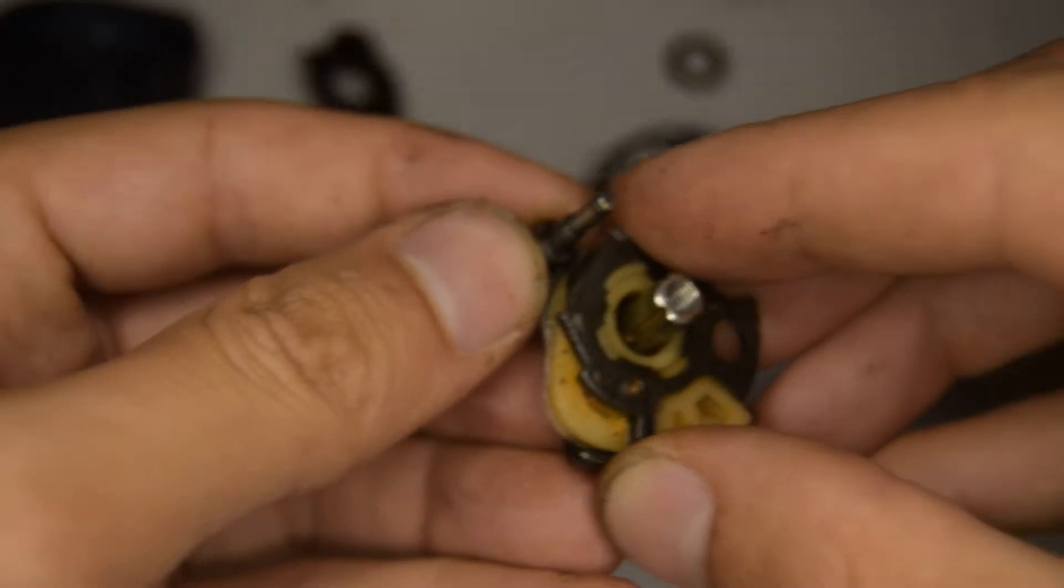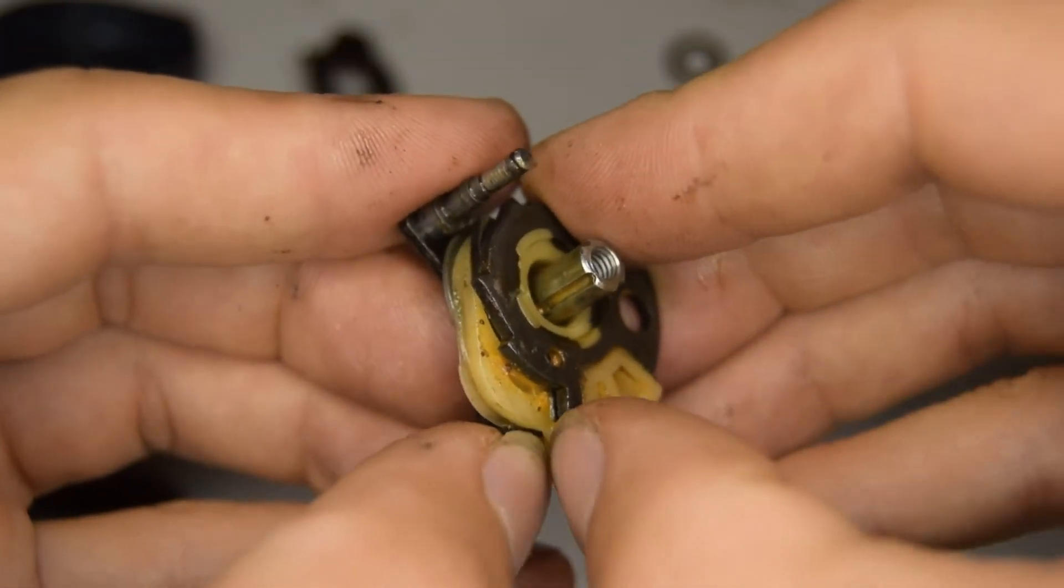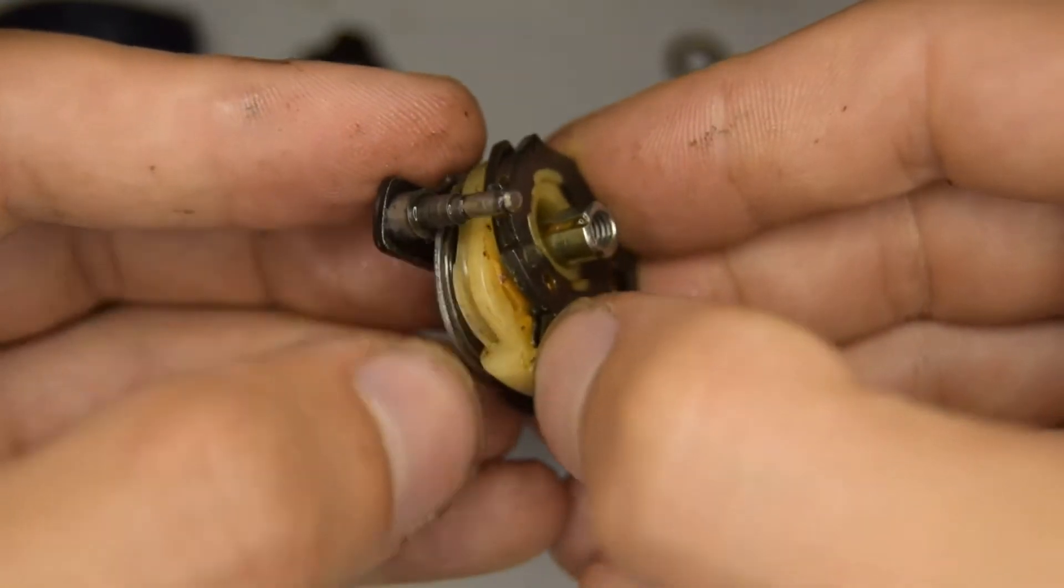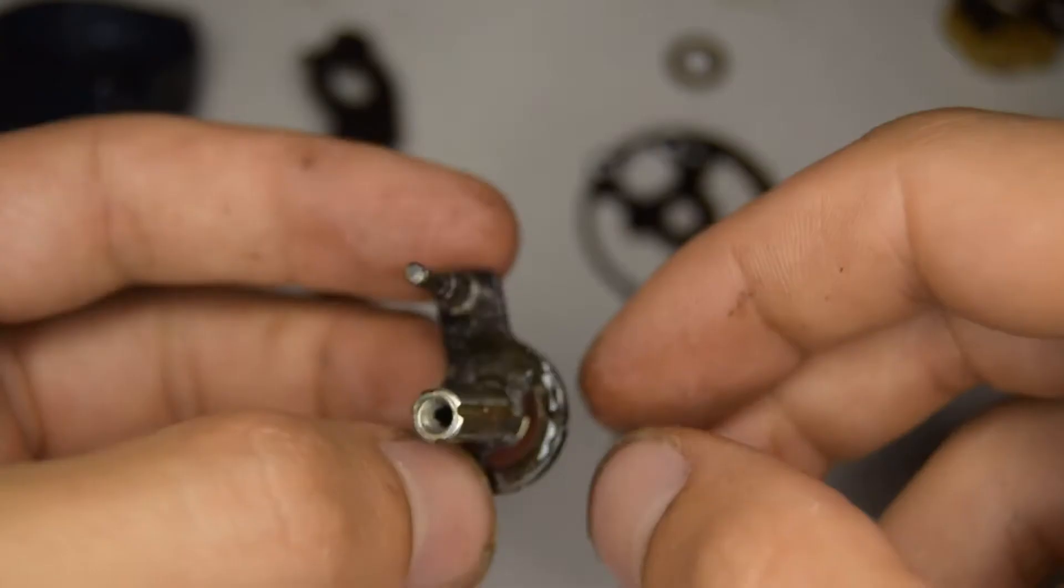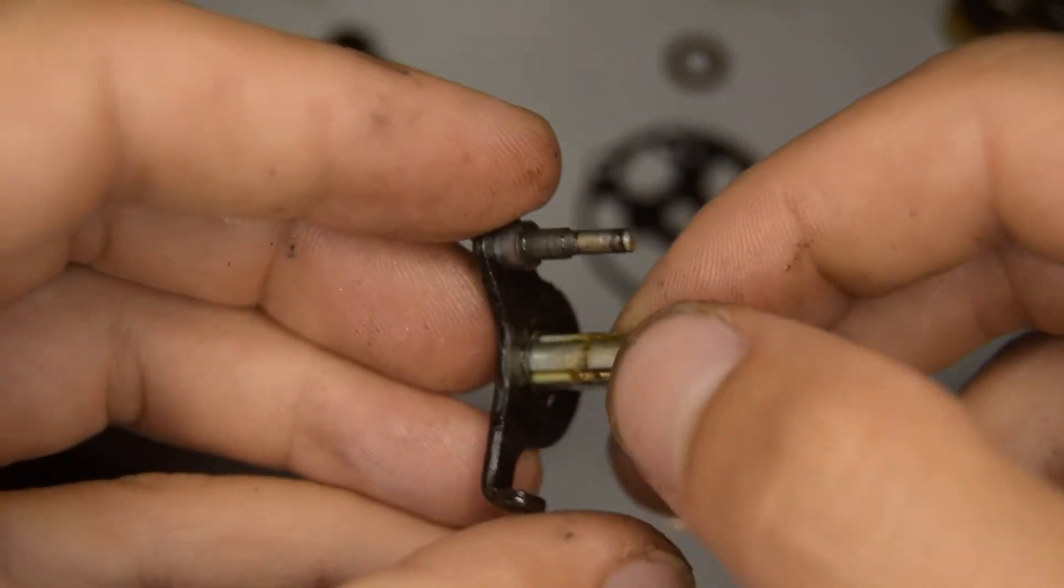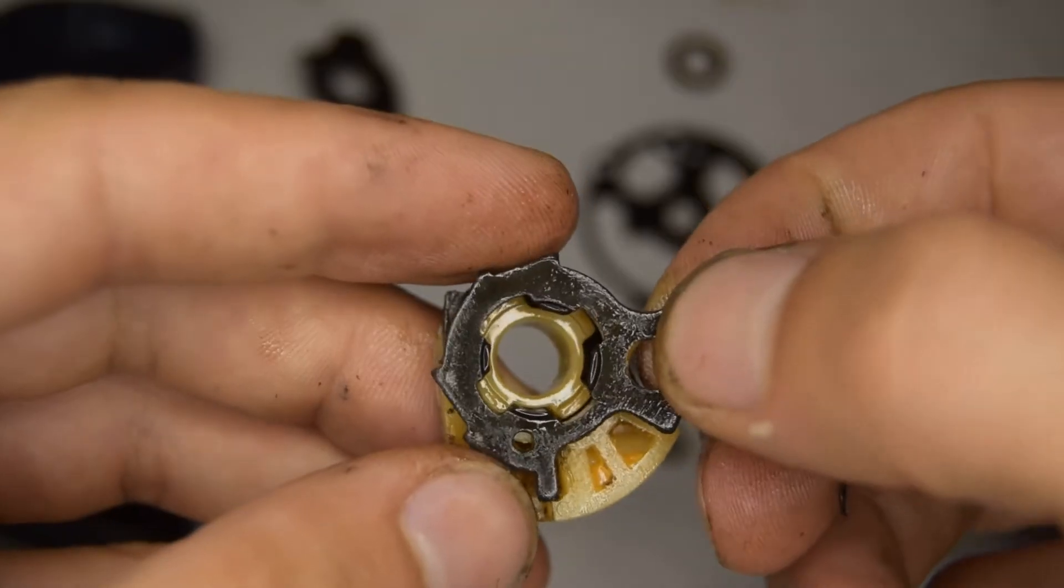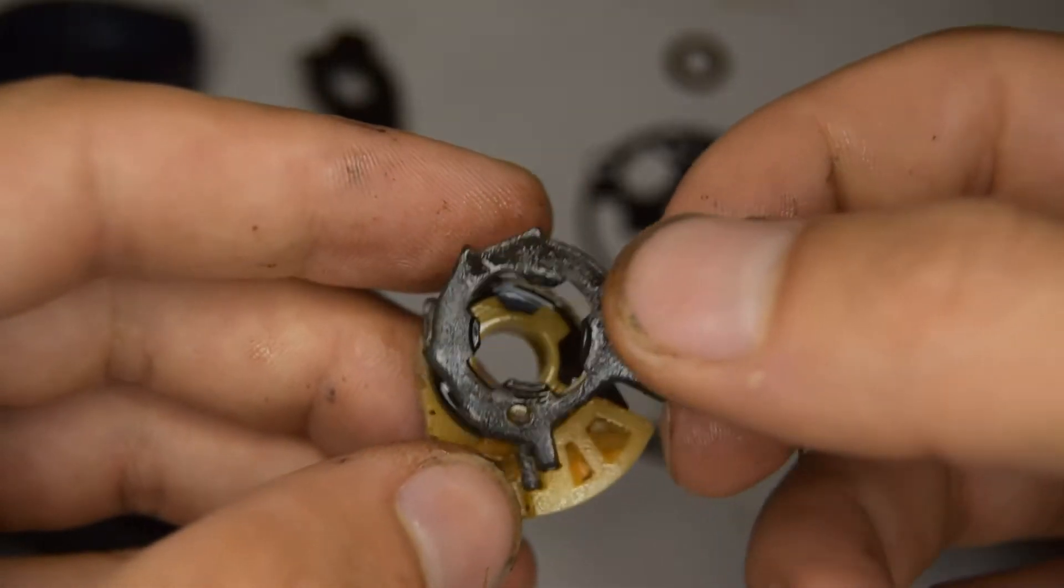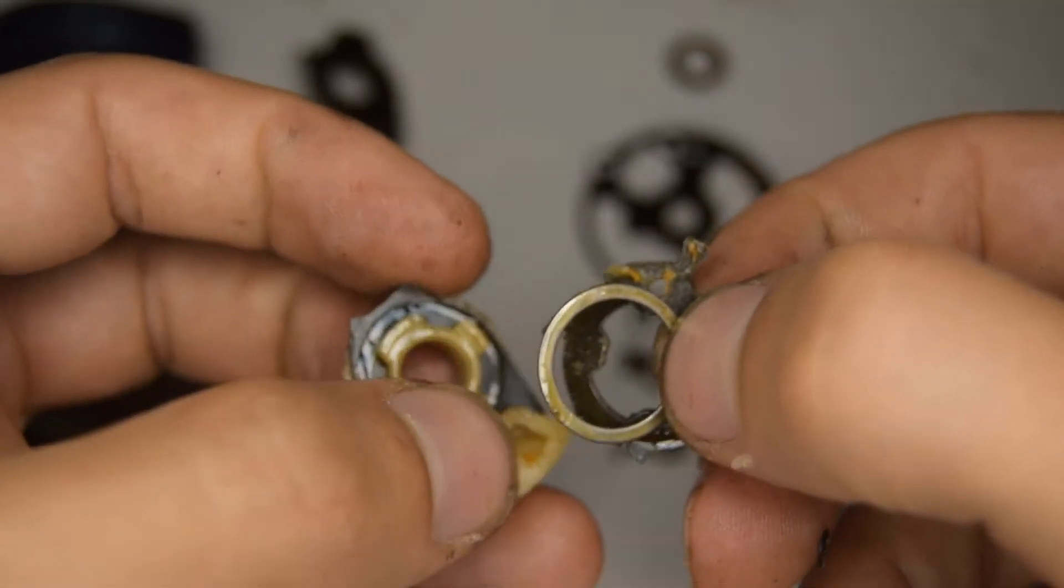So now we're going to lift this up and this is going to relieve the tension of the spring that's underneath. And we're taking off that spring. And now there's just the kind of like a pivot cross shaped pivot with grooves in it again. So we're going to take that off on top. And underneath it there's another washer.